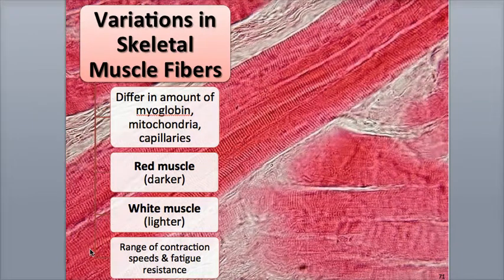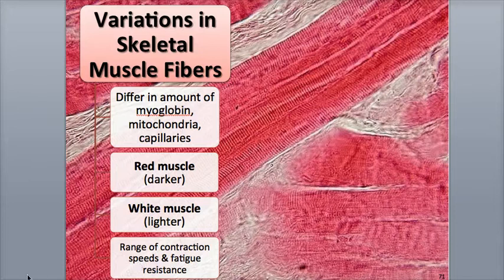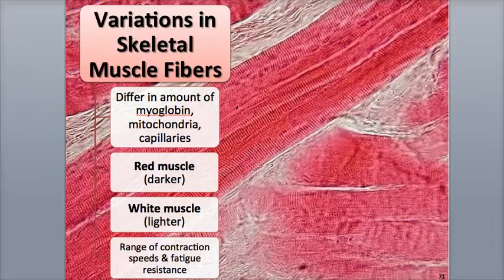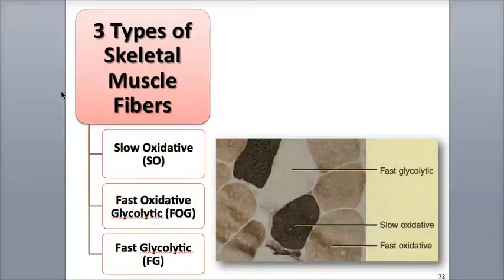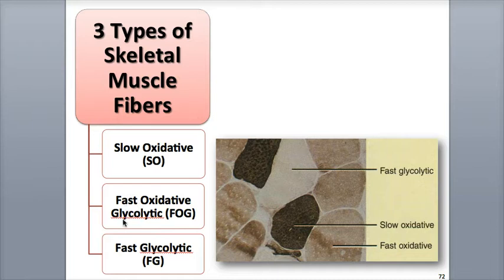Because of these variations, the types of muscle fibers display a range of contraction speeds, metabolic differences, and levels of fatigue resistance. They can be classified as being either slow or fast, based upon how quickly they hydrolyze ATP using their ATPase enzymes during muscle contraction. There are three main categories of skeletal muscle fibers: Slow oxidative, or SO fibers; Fast oxidative glycolytic, or FOG fibers; and Fast glycolytic, or FG fibers.